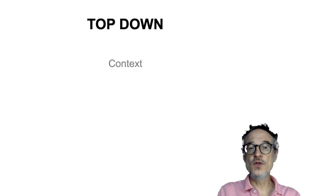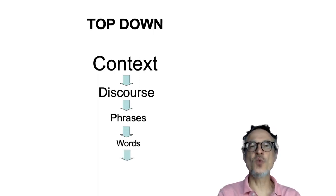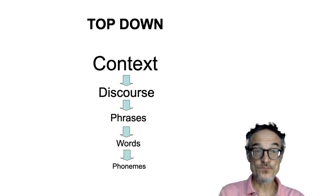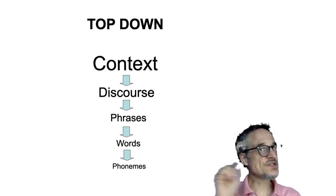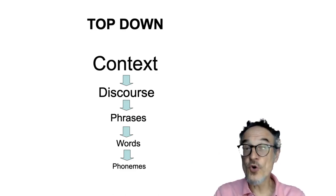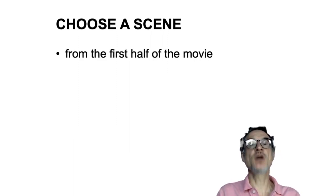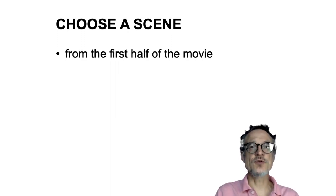With top-down processing, we know the context. From the context, we know what kind of discourse or conversation is happening. We have a good idea what the phrases will be, and the words within the phrases — most of them, we know what people are going to say. So we just sometimes have to listen for some sounds and some clues and some phrases. What's very important is context. It's very important to choose a scene from the first half of the movie so that viewers don't have to have too much background knowledge.